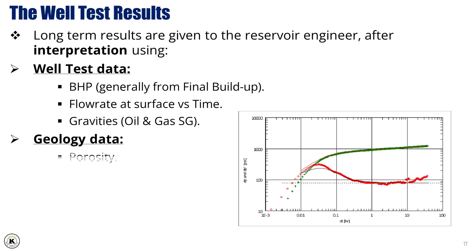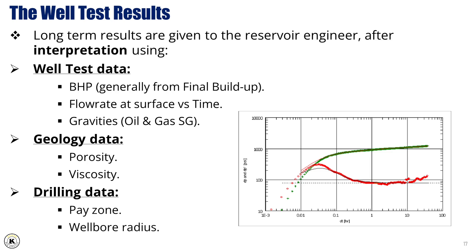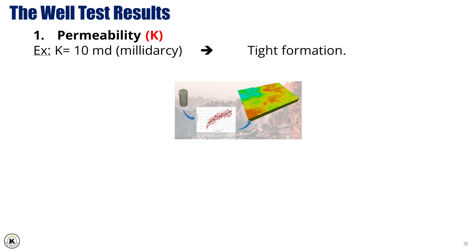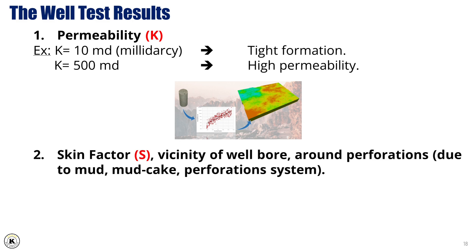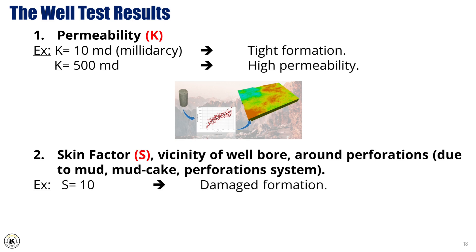Additional inputs include geology data (porosity and viscosity), drilling data (pay zone and wellbore radius). Long-term well test results include: 1. Permeability (K) — for example, K = 10 mD indicates a tight formation, while K = 500 mD indicates high permeability. 2. Skin Factor (S) — represents damage around the wellbore and perforations due to factors like mud, mud cake, or perforation systems. For example, S = 10 indicates a damaged formation, while S = 2 or -1 indicates a good formation after an acid job.